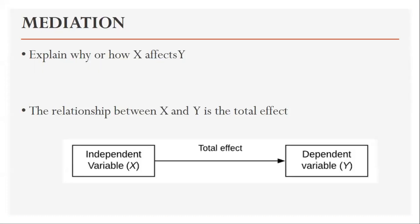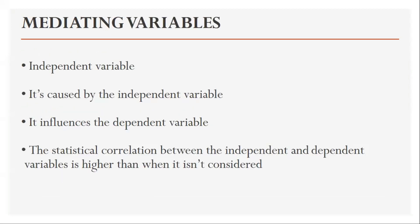Mediation analysis is an extension of multiple regression. We start to think about mediation when we want to explain why or how X affects Y. This tells us more information about how or why an independent variable affects a dependent variable. The relationship between X and Y is the total effect. A mediator is a way in which an independent variable impacts a dependent variable — it's part of the causal pathway of an effect.